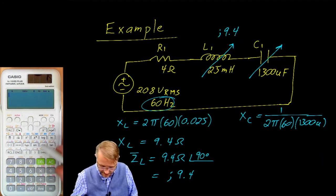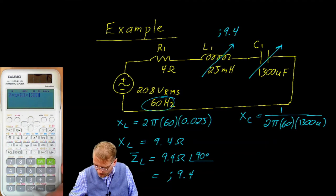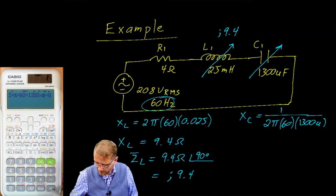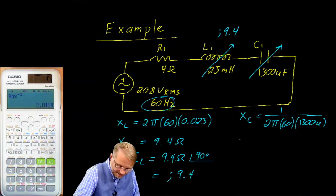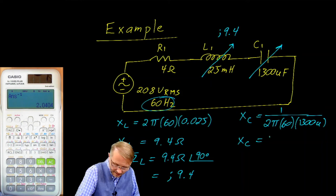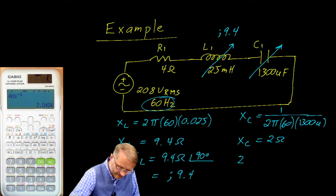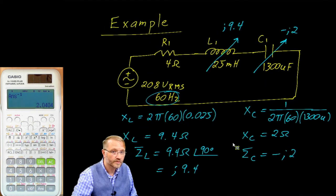We solve the capacitor the same way. 2 times pi times 60 times 1300. This button down here is useful, this x10x. So we push that, and then we say negative 6, because it's micro. And then we invert that. So we see our capacitor has a reactance of about 2 ohms. The impedance of the capacitor will be negative J2. So we can write that up here. Negative J2.